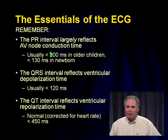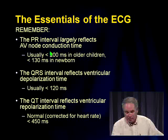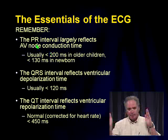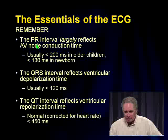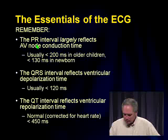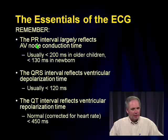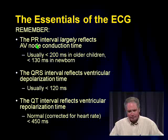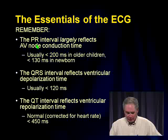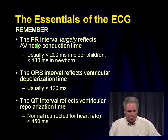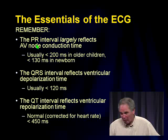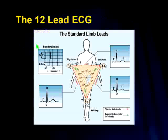Some key intervals on the electrocardiogram: the PR interval — the distance from the onset of the P wave to the QRS — largely represents AV nodal conduction time. The QRS complex duration reflects ventricular depolarization time, usually less than 120 milliseconds. The QT interval, from the beginning of the QRS to the end of the T wave, reflects ventricular repolarization time; when corrected for heart rate, it should be less than 0.44 seconds.